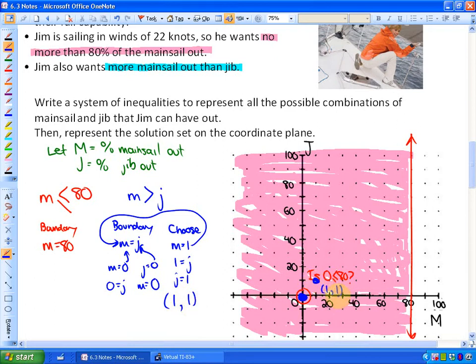And because they are not allowed to be equal, there is no equal to sign there, this line is going to be a dotted line. So here is what it looks like at this particular point.